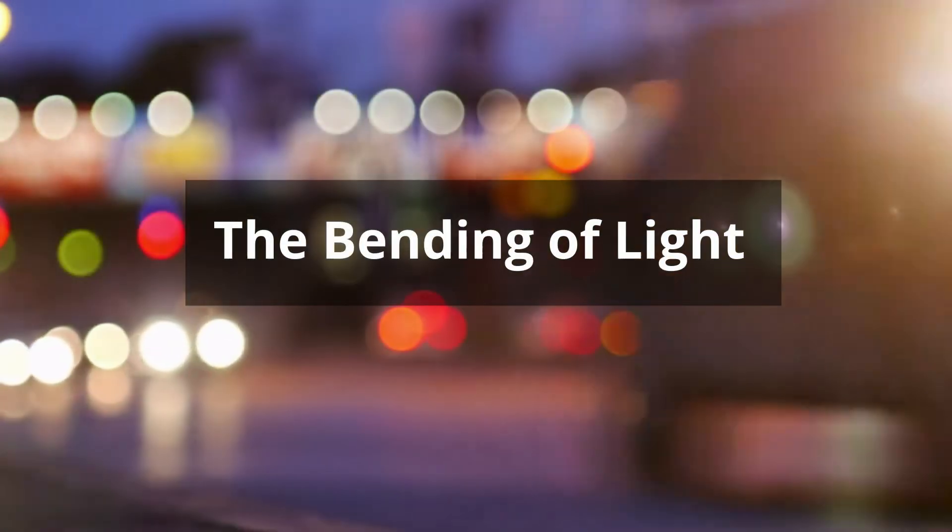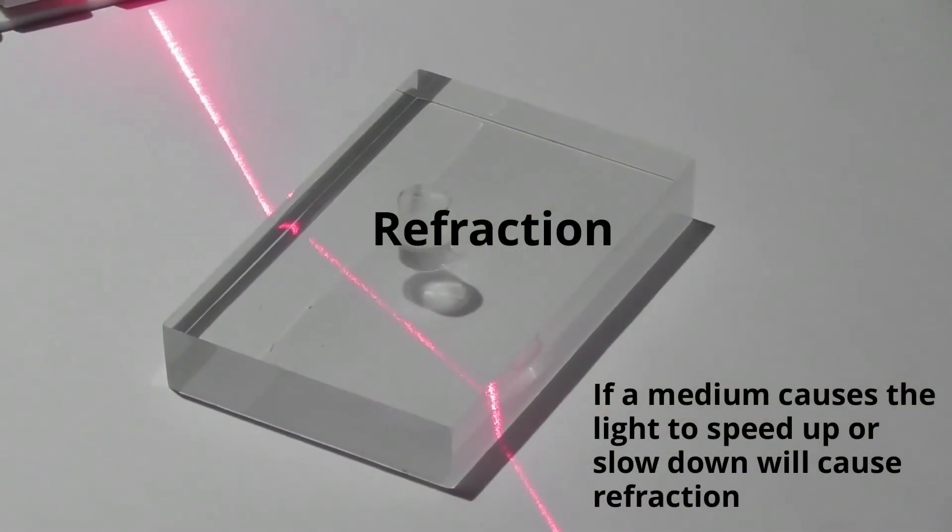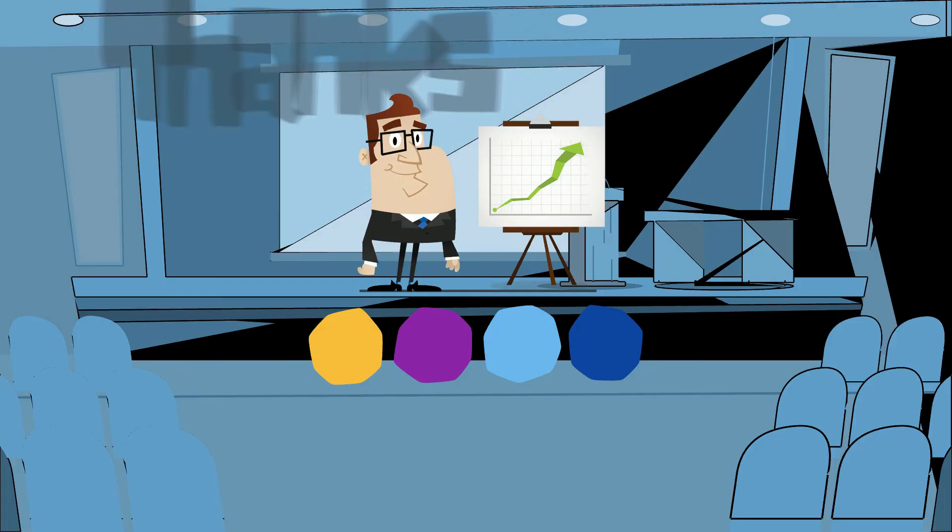So in summary, refraction and diffraction is the bending of light due to either slowing down or going around an object.